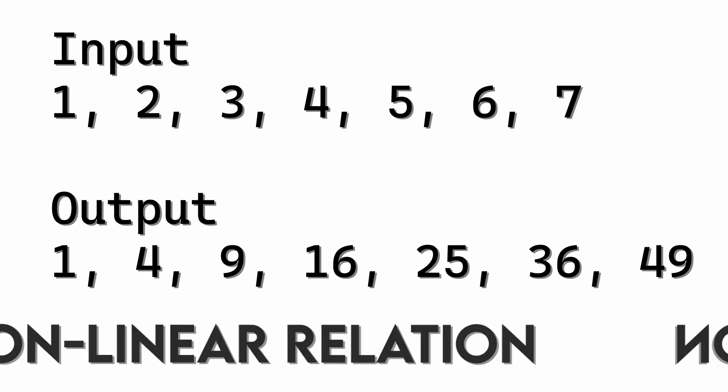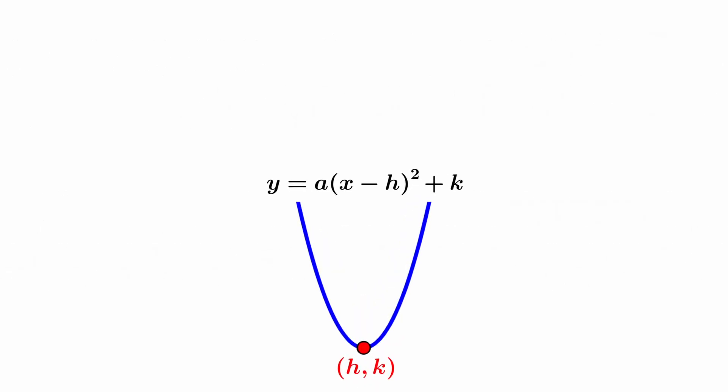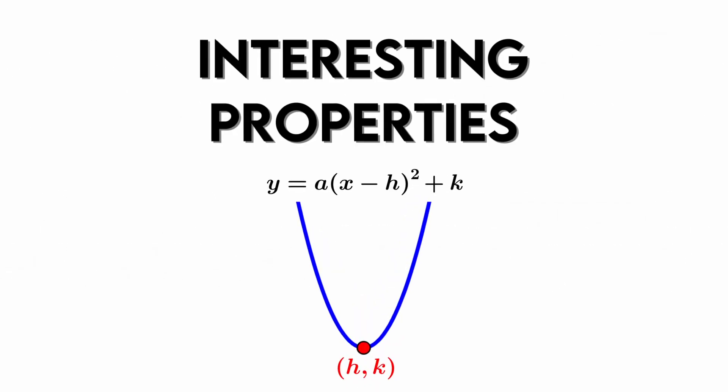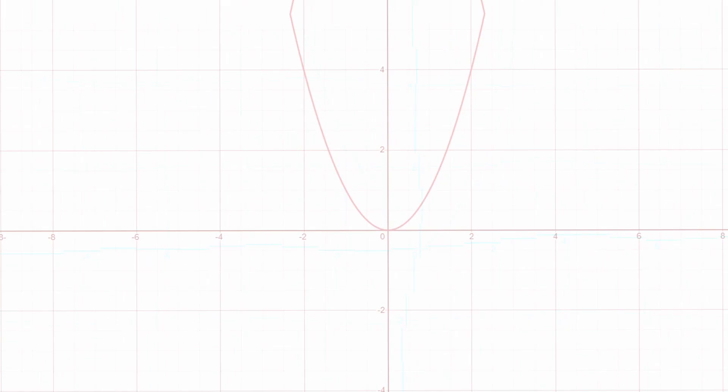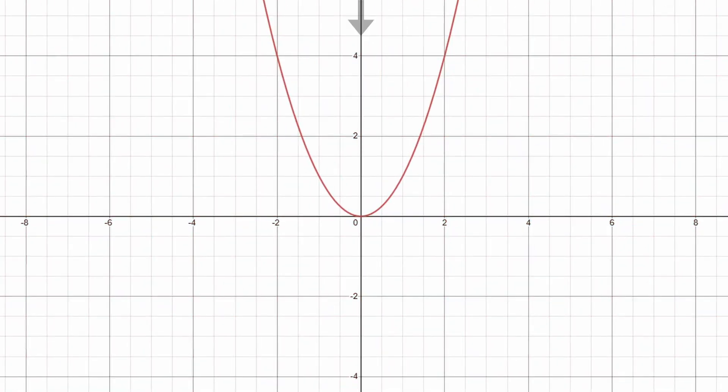While a linear graph is straightforward, a parabola possesses many interesting properties. But what we will be focusing on is the vertex of a parabola. The point in which the parabola has a slope of 0. This introduces us to the next formula.